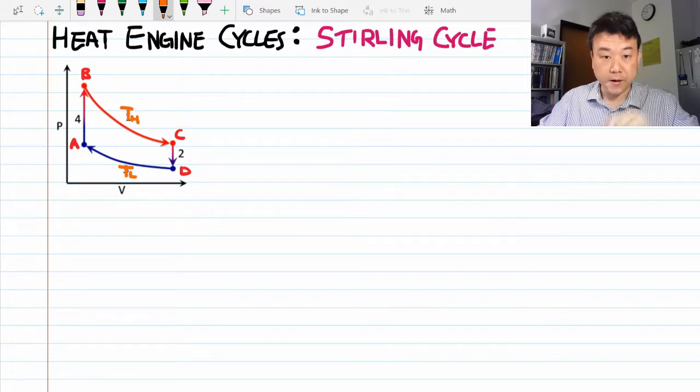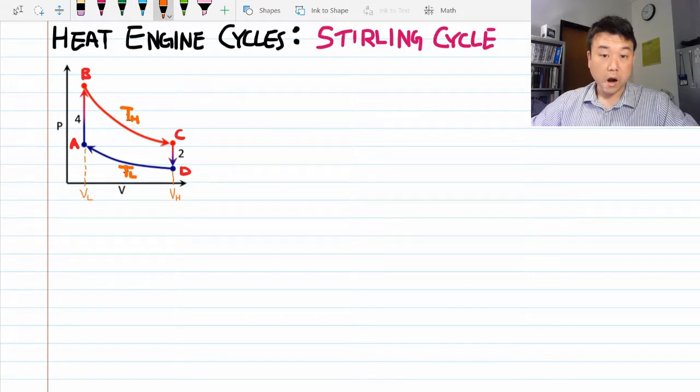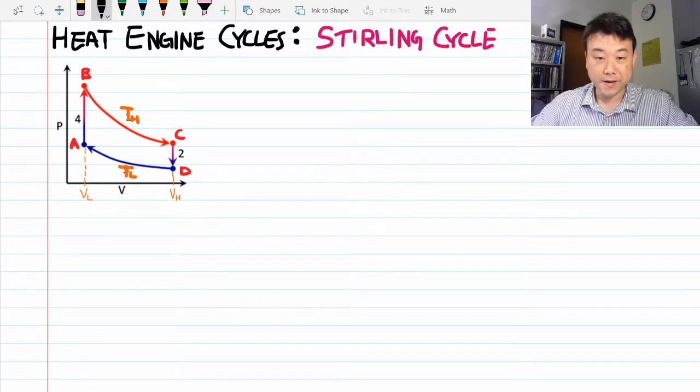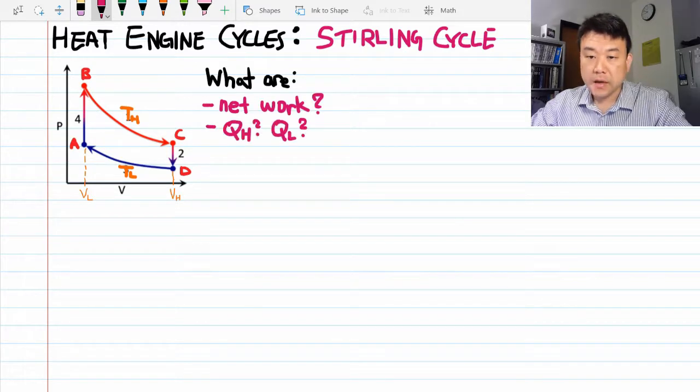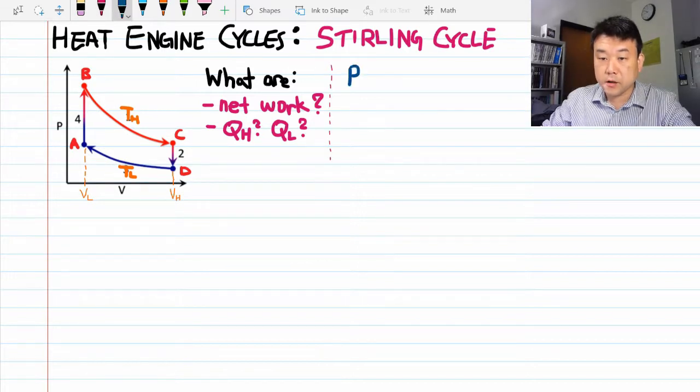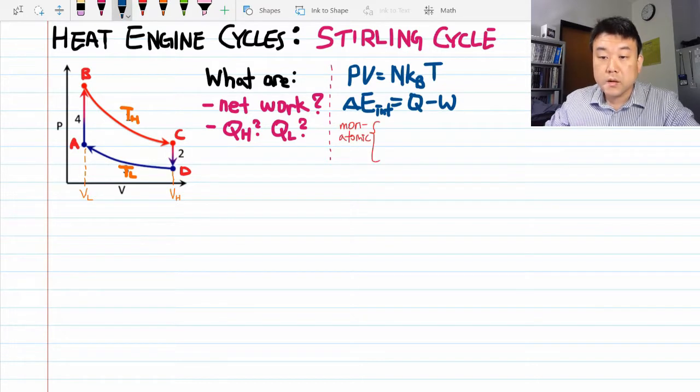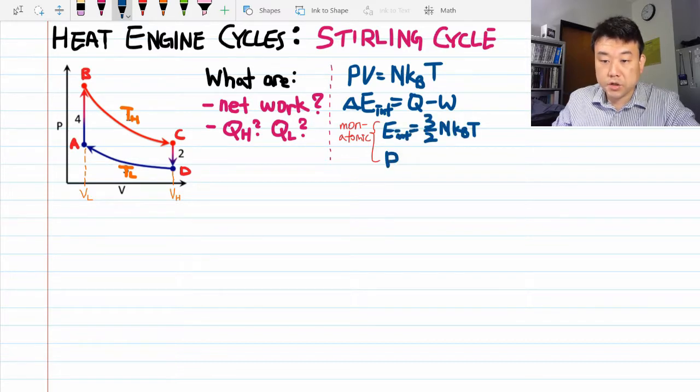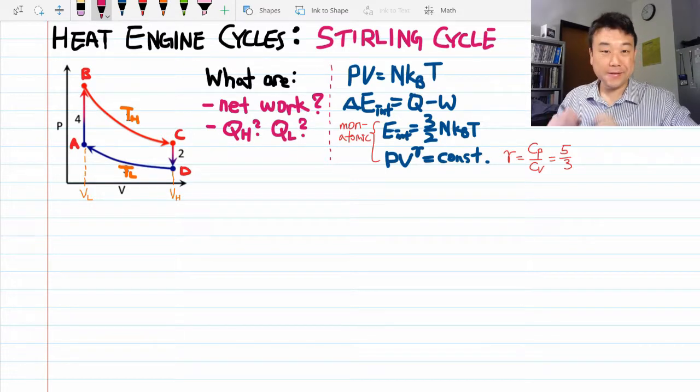Alright, I think I only need two more parameters: the high volume and the low volume. Alright, I guess that's everything. So we are asking the same question as before - that is, what are the network done and the heat transfers. And as before let me write down all the formulas we'll need. There's the ideal gas law, the first law of thermodynamics, and for monatomic gases, the expression for the internal energy, and the adiabatic relationship. Alright, that's it. I've done this enough. Alright, so let's get started.